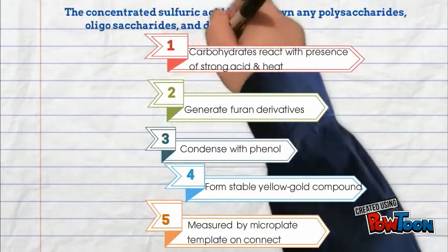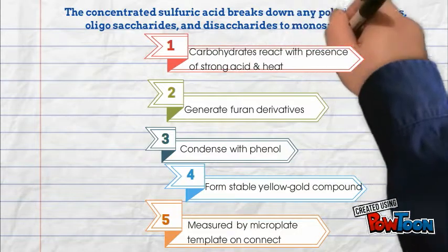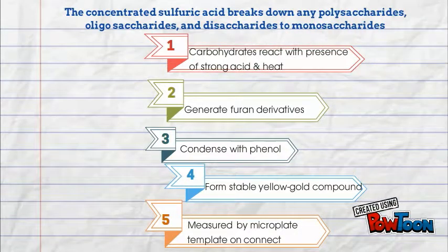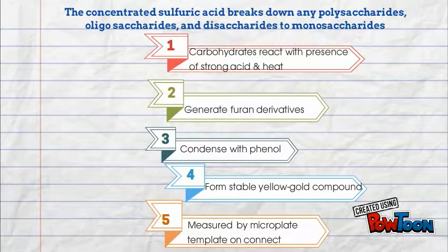For phenol, it will react with sulfuric acid and the pentols that have been dehydrated will produce a yellow-gold color. Lastly, it will be measured by microplate reader on a kinetics setting.